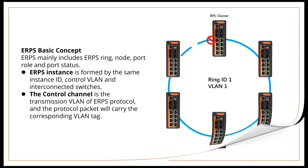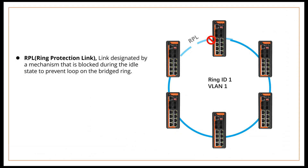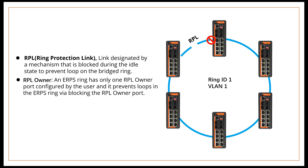RPL, or ring protection link, is a link designated by a mechanism that is blocked during the idle state to prevent loops on the bridged ring. An ERPS ring has only one RPL Owner port, configured by the user, and it prevents loops in the ERPS ring by blocking the RPL Owner port.